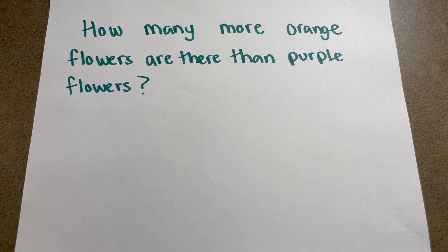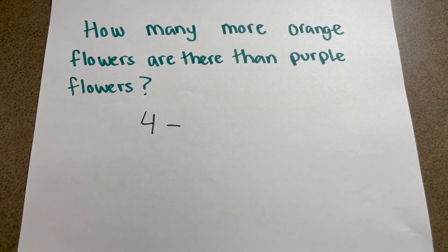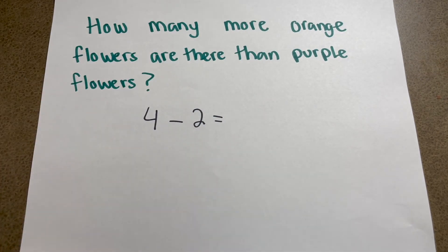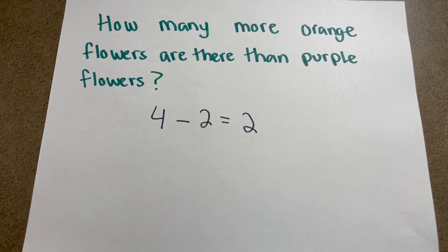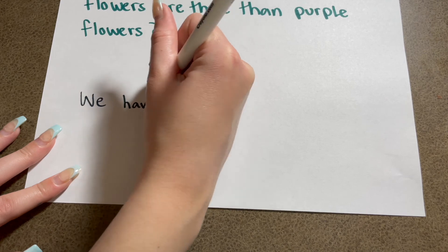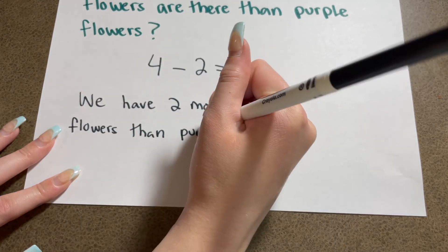The next question: how many more orange flowers are there than purple flowers? How many orange flowers do we have? Four. And how many purple? Two. So write four minus two equals two. That means we have two more orange flowers than purple flowers. Let's write: we have two more orange flowers than purple flowers.